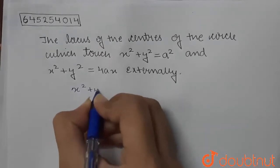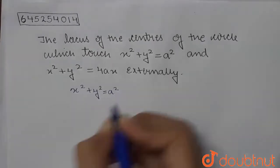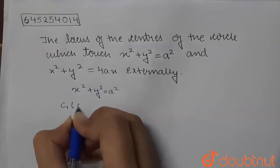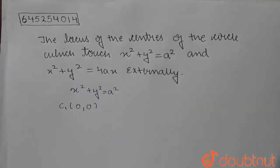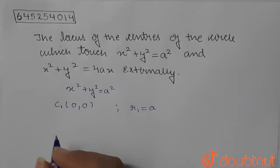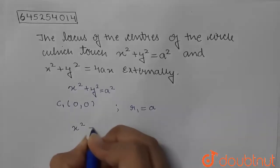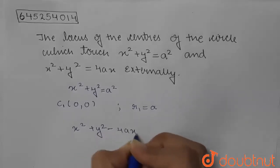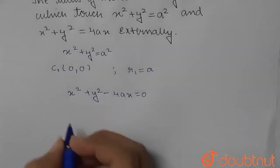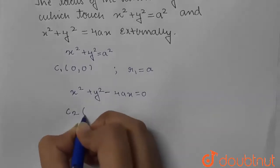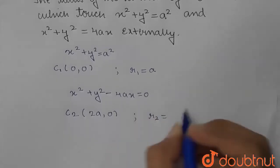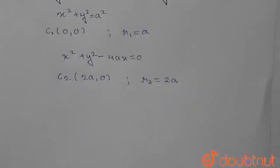The first equation of the circle given to us is x² + y² = a². This is the standard equation of the circle. Let the center be C₁, so the center is (0, 0) and radius r₁ = a. The next equation is x² + y² − 4ax = 0. Its center C₂ has coordinates (2a, 0) and radius r₂ = 2a.